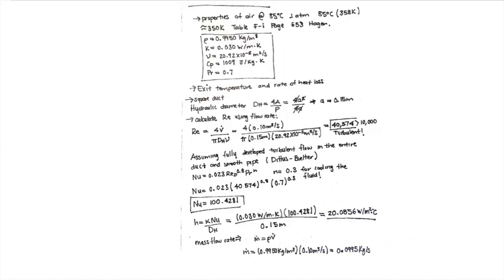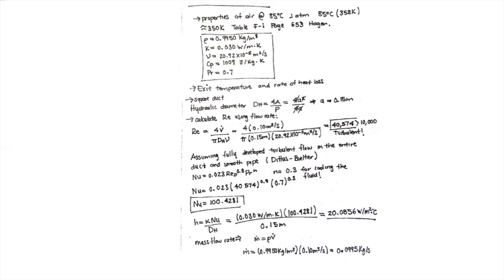Assuming a smooth pipe allows us to use the Dittus-Boelter equation, which is equation 7.61 in your textbook. It is not in Table 7.3's summary of internal convection Nusselt correlations because it's a very important equation that you should add by hand. The Dittus-Boelter equation is: Nu = 0.023 × Re^0.8 × Pr^n, where n = 0.3 when cooling the fluid and n = 0.4 when heating the fluid. Please add that note to your table.